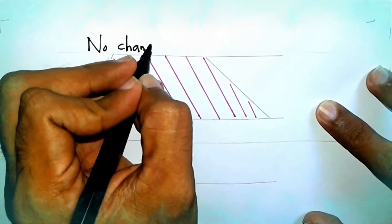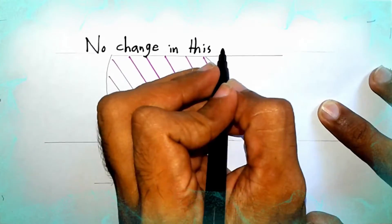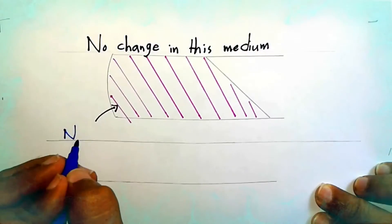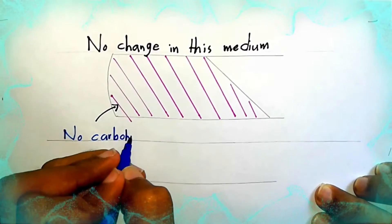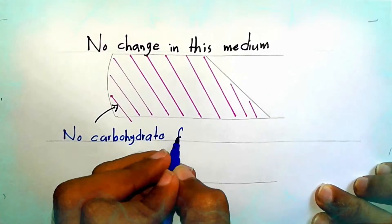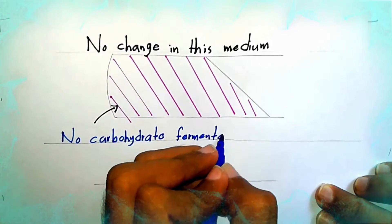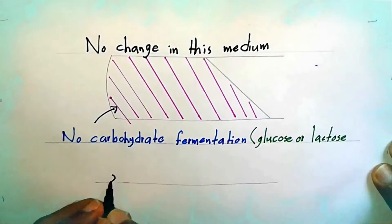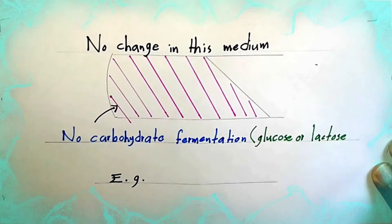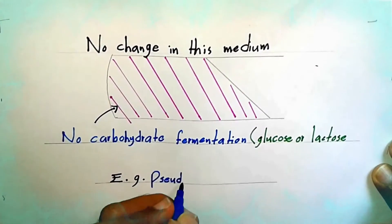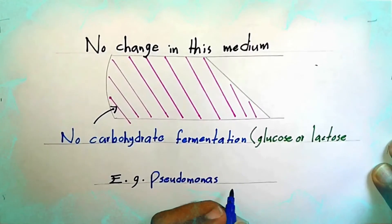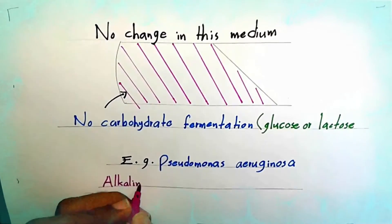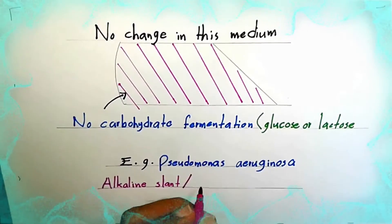No change in this medium. No carbohydrate fermentation, glucose or lactose. Pseudomonas aeruginosa. Alkaline slant and alkaline butt, KK pattern.